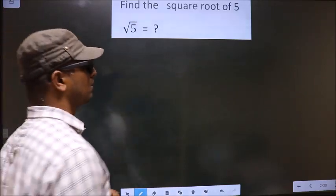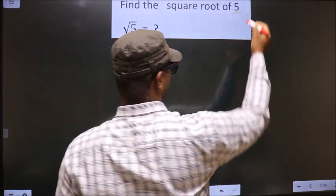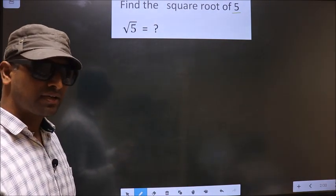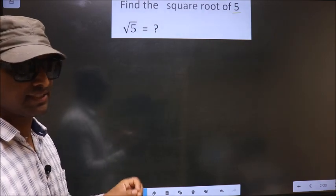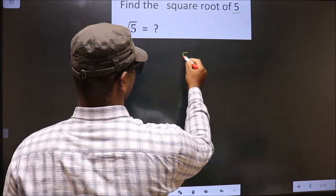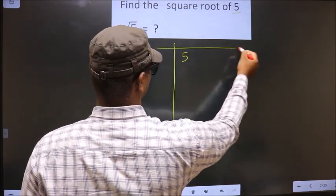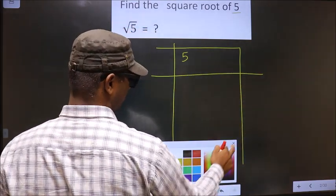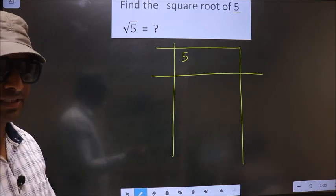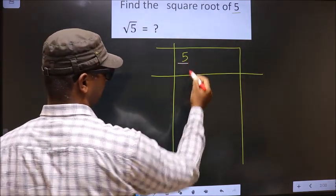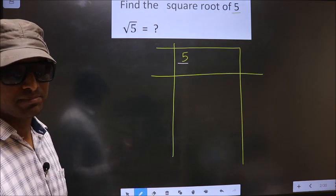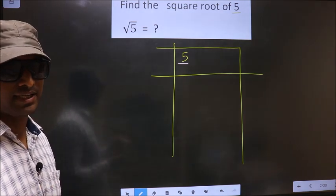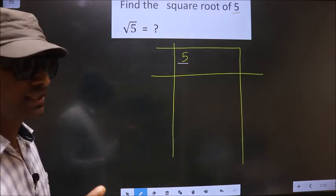Find the square root of 5. To find the square root by the long division method, first we should frame it in this way — that is 5. Now here we have 5. Since 5 is not a perfect square number, we should check between which two square numbers 5 lies.